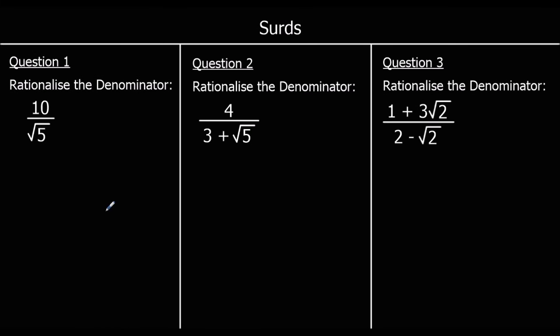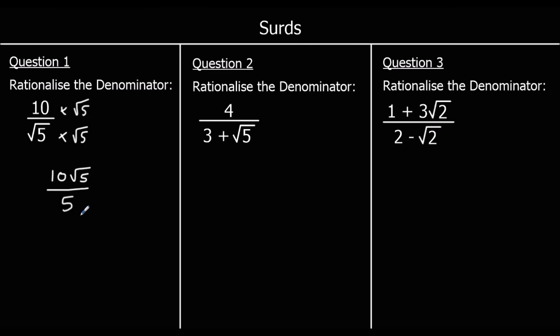To finish up — pause the video, give them a go, and press play when you're ready for the answers. Question 1: 10 over root 5. We're going to multiply top and bottom by root 5. The top is 10 times root 5, which is 10 root 5. The bottom is root 5 times root 5, which is 5. So 10 root 5 over 5 — simplifying by dividing the top by 5 — gives 2 root 5.